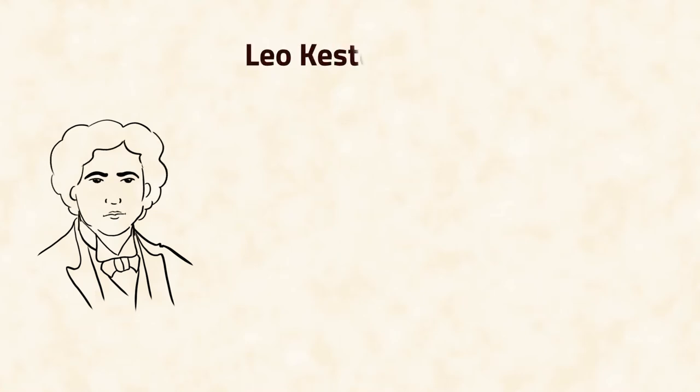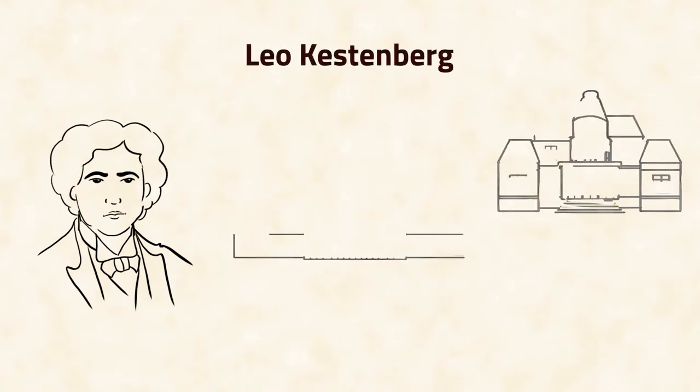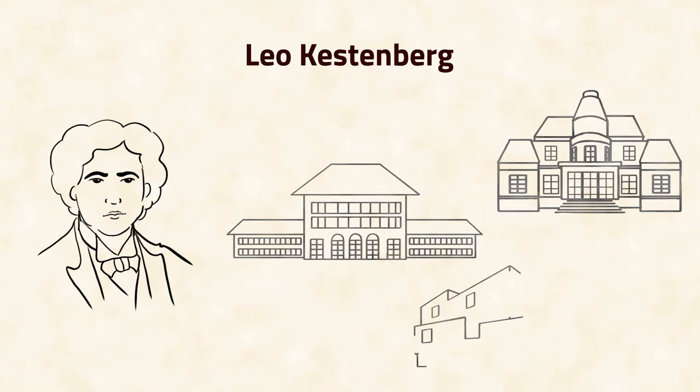Within Germany, the reforms in music pedagogy initiated by Leo Kestenberg paved the way for Rhythmics into conservatories, universities and other pedagogical and artistic institutions.